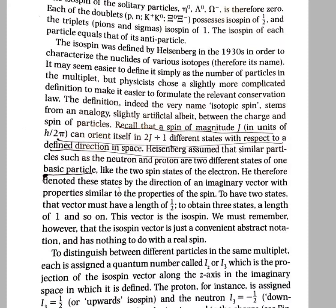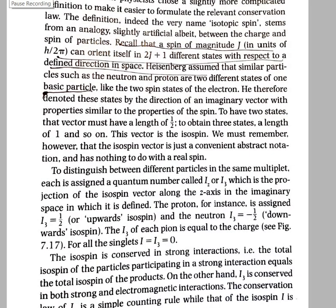Heisenberg therefore denotes this state by the direction of an imaginary vector with properties similar to those of spin. To have three states, this vector must have length 1; to have only a single state, the vector must have length 0. You must remember that the isospin vector is just a convenient abstract notation and has nothing to do with real spin. There is no one-to-one relation between real spin and isospin.